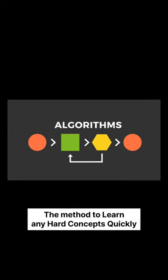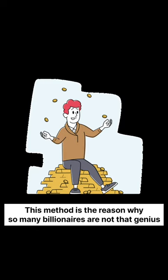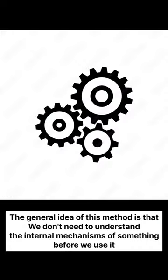The black box method is a method to learn any hard concepts quickly. This method is the reason why so many billionaires are not that genius. The general idea of this method is that we don't need to understand the internal mechanisms of something before we use it.